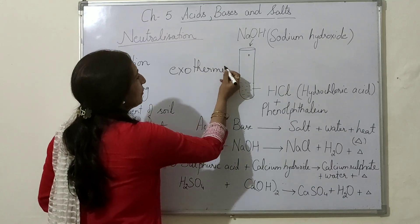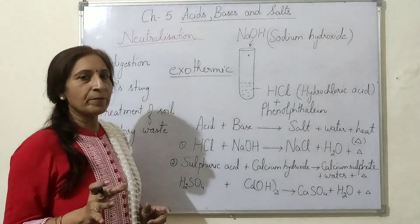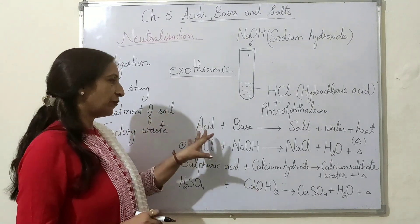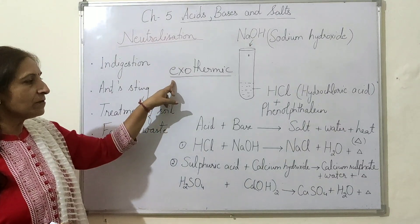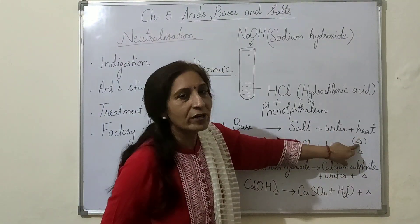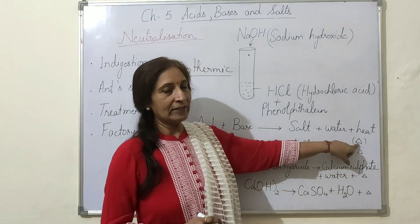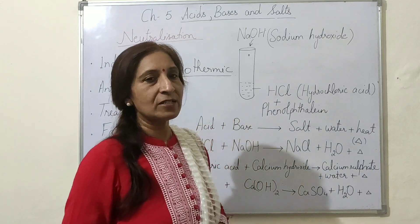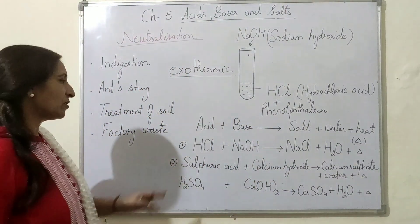If the reaction mixture becomes cold, that reaction is called an endothermic reaction, but neutralization is an exothermic reaction. Here I have drawn a small triangle — this is called delta, it is a Greek alphabet and it represents heat. So in a neutralization reaction, acid and base react and form salt and water along with the evolution of heat.